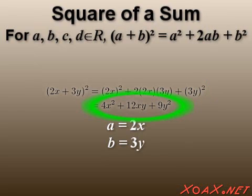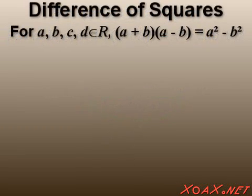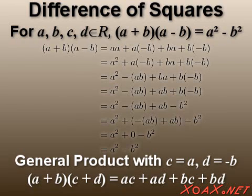For our third formula, we have the difference of squares. To get this formula we use the generalized formula with c equal to a and d equal to negative b. Then we get (a + b)(a - b) equals a·a + a·(-b) + b·a + b·(-b).